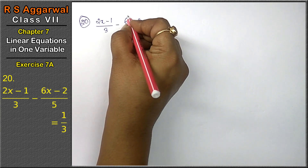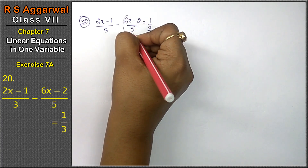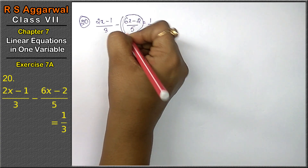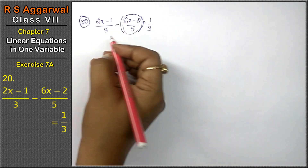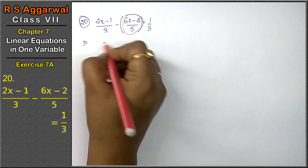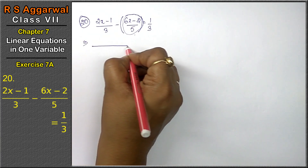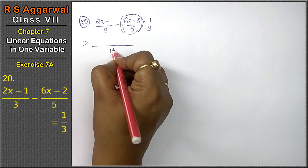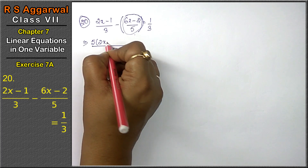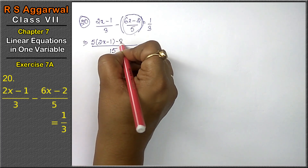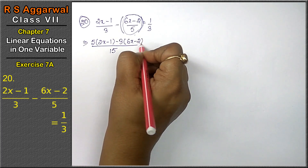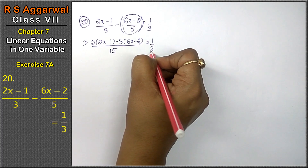Friends, when there is a negative sign, we will put the term in a bracket. Since all x terms are on one side, we take LCM of 3 and 5, which is 15. So we get: 5 multiplied by (2x minus 1), minus 3 multiplied by (6x minus 2), equals 1 upon 3.